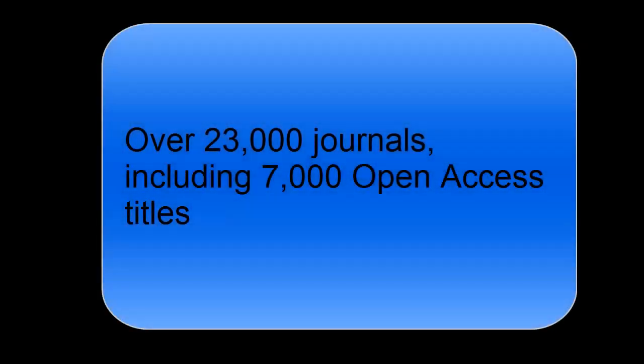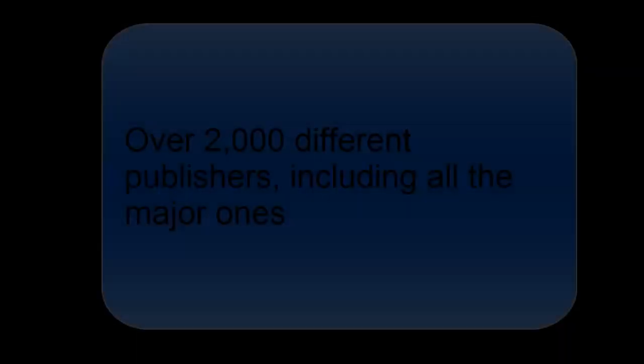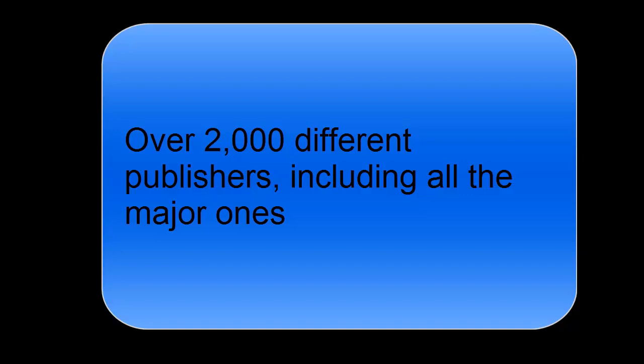Some background information about JournalTalks Premium: tables of contents from over 23,000 journals, including 7,000 open access titles, are included. It covers more than 2,000 different publishers, including all the major ones, and it covers all subjects.